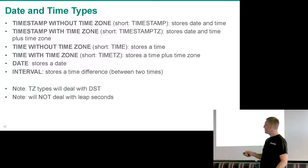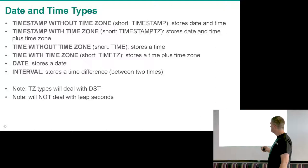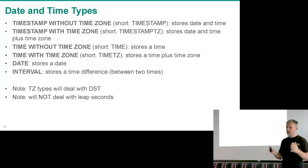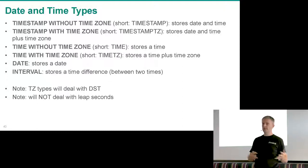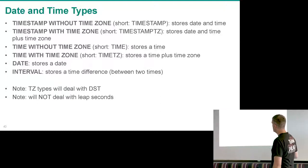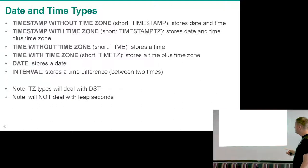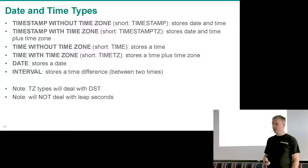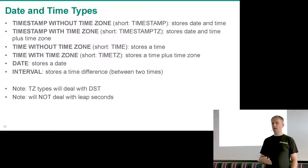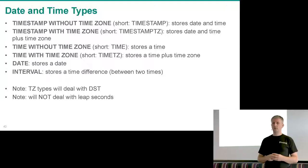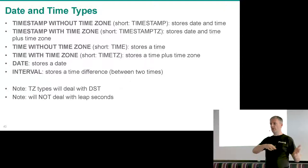We have a number of date and time data types: timestamp with and without time zone, time with and without time zone, date (without time zone, since it's just a date), and interval — a difference between two times. Postgres handles daylight saving time for you: if you specify a time zone it knows about summer/winter time. However, it does not know about leap seconds, since the time zone database only records when time zones were changed, not leap second events.